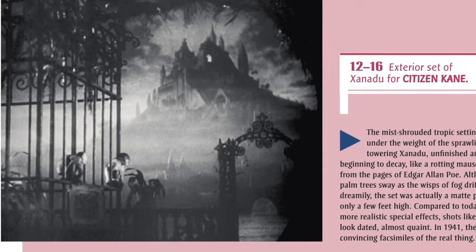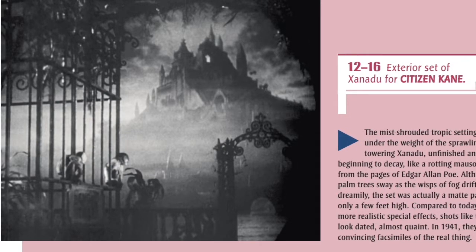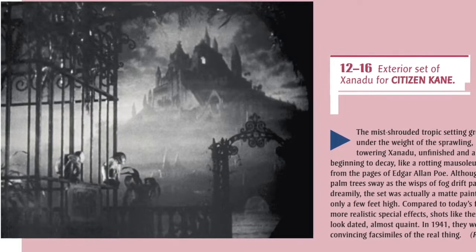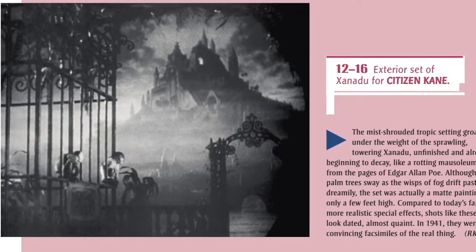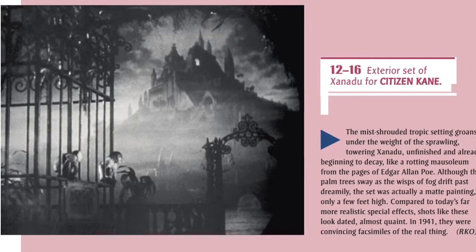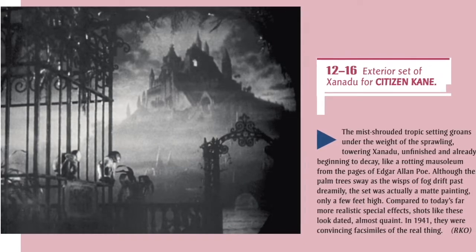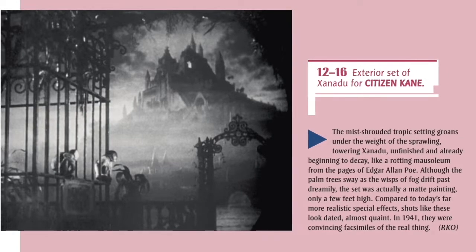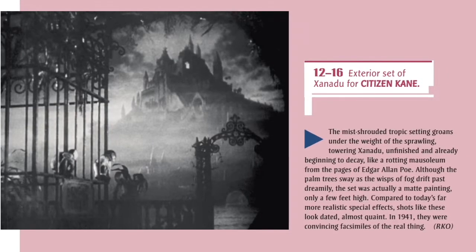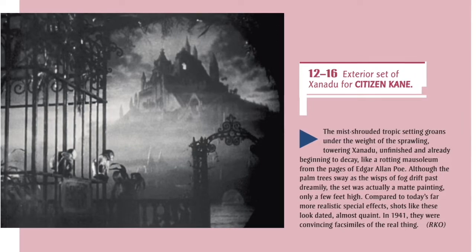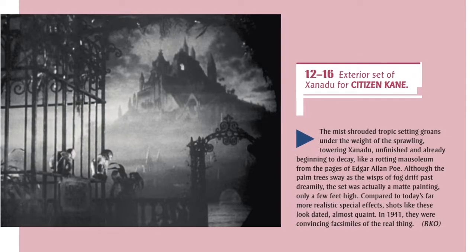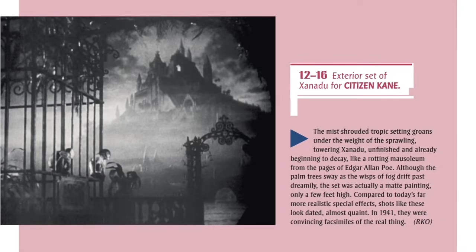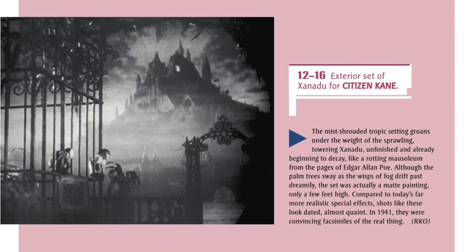12-16: Exterior set of Xanadu for Citizen Kane. The mist-shrouded tropic setting groans under the weight of the sprawling, towering Xanadu, unfinished and already beginning to decay, like a rotting mausoleum from the pages of Edgar Allan Poe. Although the palm trees sway as the wisps of fog drift past dreamily, the set was actually a matte painting only a few feet high. Compared to today's far more realistic special effects, shots like these look dated, almost quaint. In 1941, they were convincing facsimiles of the real thing.